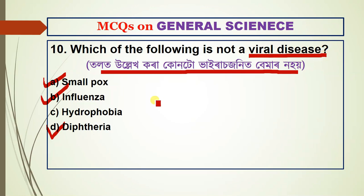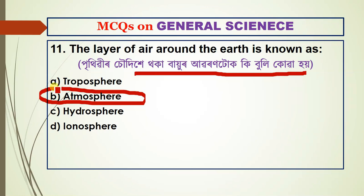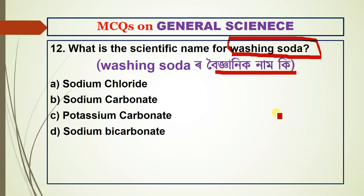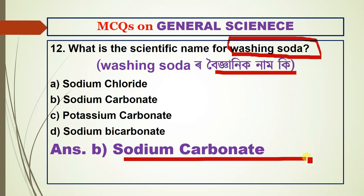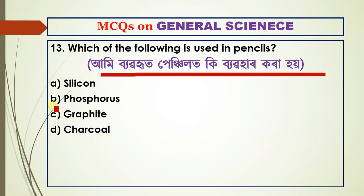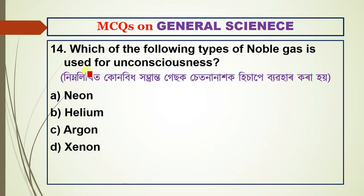Question number eleven: the layer of air around the earth is known as what? Question number twelve: what is the scientific name of washing soda? Question number thirteen: which of the following is used in pencils?